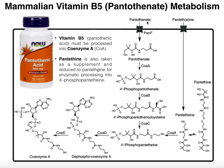Here's pantothenate. Pantothenate is going to first have to be transported into cells that are actually going to build up coenzyme A. It's going to run through this transporter in cell membranes called pan-F, at least what it's called in most bacteria. Once pantothenate is in the cell, it's going to react with an enzyme typically called CoaA — that's the gene name, but the enzyme itself is called pantothenate kinase. It's going to phosphorylate this hydroxyl group shown over here on the far left, using the phosphate from ATP. That's going to give us 4'-phosphopantothenate.